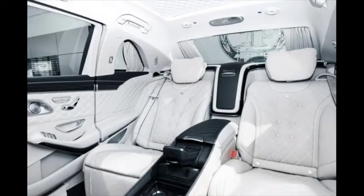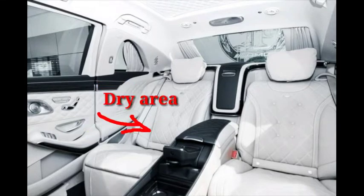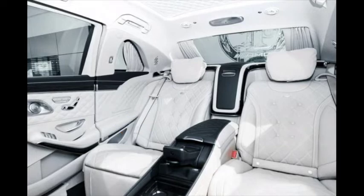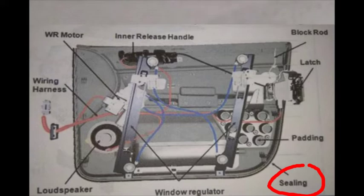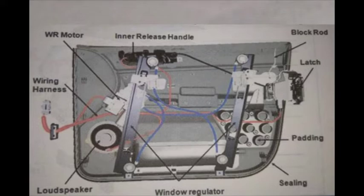Towards the inner steel, it is called the wet area, and towards the passenger side it is called the dry area. To prevent water seepage from the wet area, one sealing of rubber will be used throughout the boundary of the door panel. Another sealing is used for the medallion. The components visible in the image include: WR motor, inner releasing handle, wiring harness, loudspeaker, window regulator, sealing, padding, door latch, and block rod.